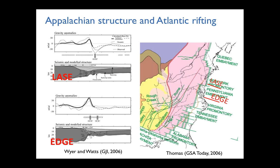The GeoPRISM implementation plan already spelled out many scientific objectives for these locations: what controls the architecture of rifted margins during and after breakup, how the processes driving rifting interact and evolve, how magmatism and rift structure vary along the rift segment, and how the rift evolves through time.